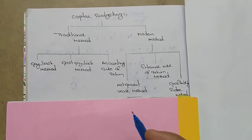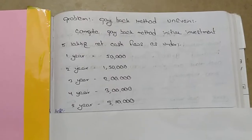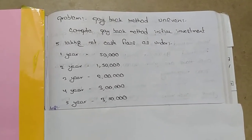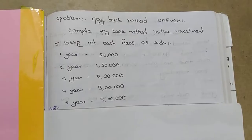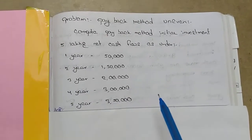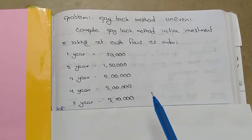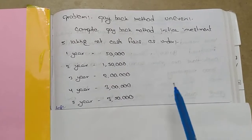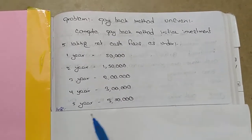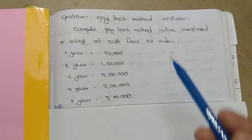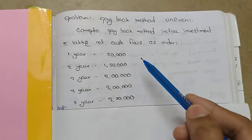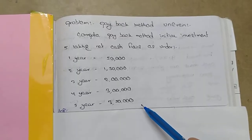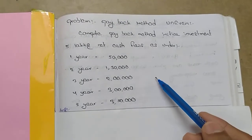Now the uneven format problem: compute the payback method. Initial investment is five lakhs. Net cash flows are as follows — first year: fifty thousand; second year: one lakh fifty thousand; third year: two lakhs; fourth year: three lakhs; fifth year: three lakhs fifty thousand. In the uneven format, the cash flow amount changes year to year, unlike the even problem where it remains constant.